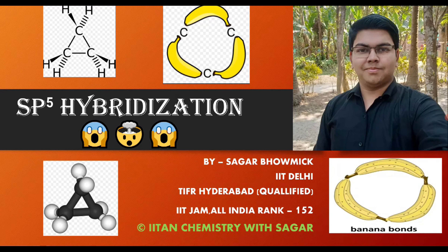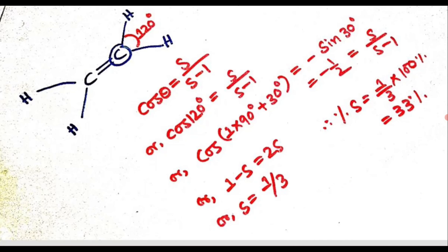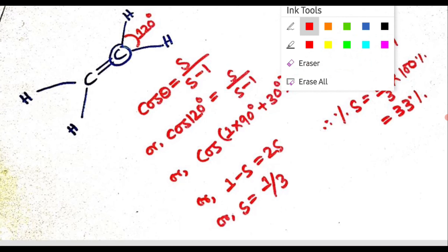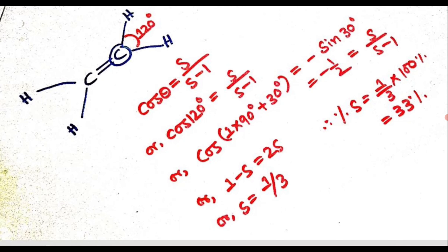So let's get started. First we will learn a formula to find S character. The formula is: cos θ = S / (S − 1), where θ means bond angle and S means S character. We are taking the example of ethylene, where we know that the carbon is sp2 hybridized and the bond angle is 120°.